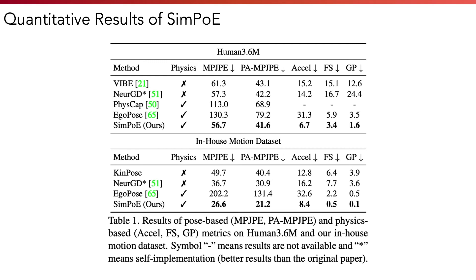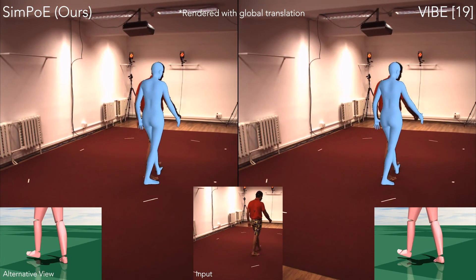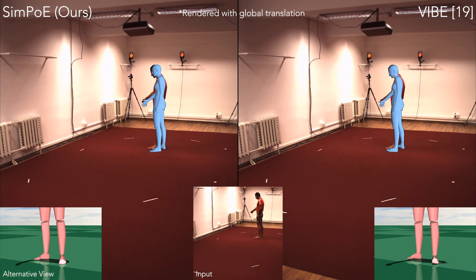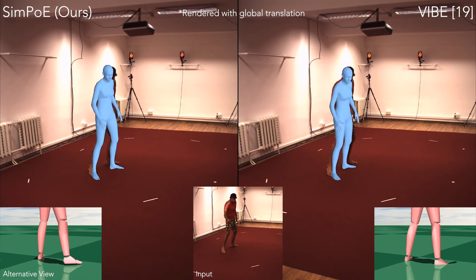Quantitative results show that on both Human 3.6M and an in-house motion dataset, SIMPLE beats prior kinematic and physics-based methods in both pose-based and physics-based metrics. In particular, SIMPLE substantially outperforms prior physics-based approaches. Qualitative results show that SIMPLE has little physical artifacts such as foot sliding, jitter, and ground penetration compared to kinematic-based methods, and produces more natural and realistic human motions.